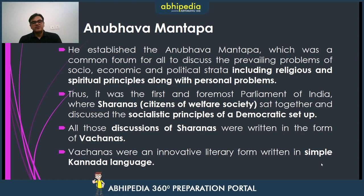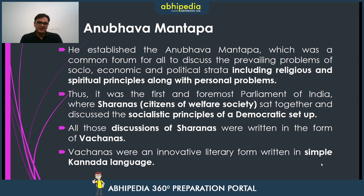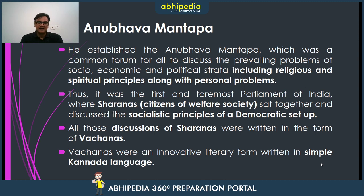Anubhava Mantapa is a common forum for all to discuss the prevailing problems of social, economic and political strata, including religious and spiritual principles along with personal problems. People practiced participative democracy — their problems discussed and solutions created. It was the first and foremost parliament of India. All discussions of Shranas, the citizens of the welfare society, were written into Vachnas in simple Kannada language so that all people could understand.